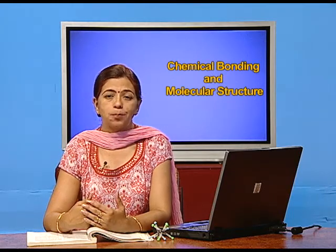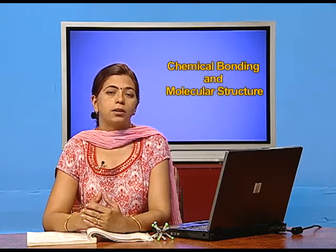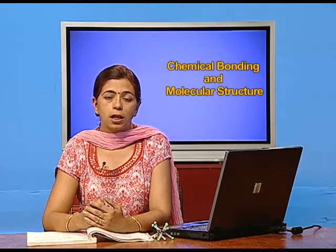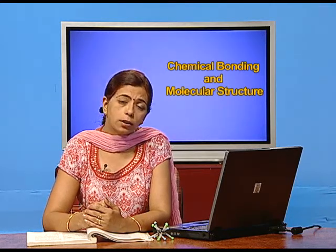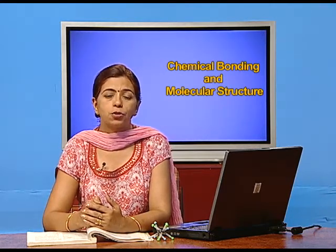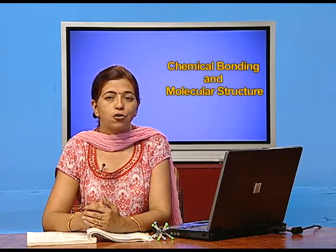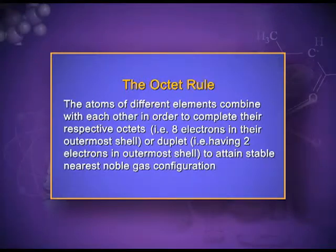Now the octet rule. From all these examples it is clear that completing the octet is the most stable state. Noble gases have their octet complete, and all other elements enter into this most stable state. The octet rule states that atoms of different elements combine with each other in order to complete their respective octets — that is, eight electrons in their outermost shell — or duplet (two electrons in the outermost shell) — to attain the nearest noble gas configuration.